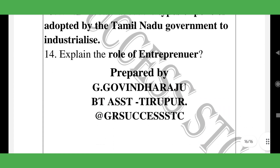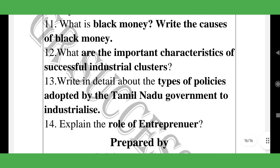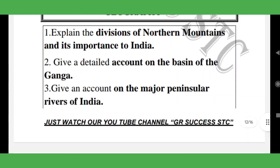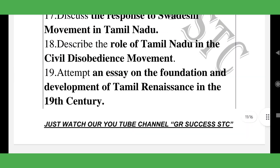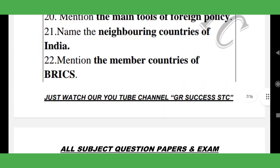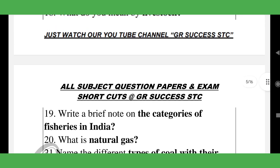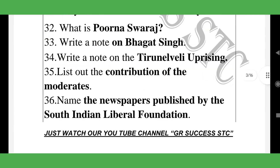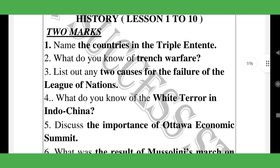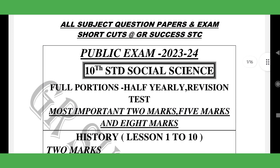So in this category, 10 Standard Social Science covers History, Geography, Economics, and Civics. The most important are the two-mark, five-mark, and eight-mark questions. This video is very useful — share it with friends and follow our channel. If you learn these, there is definitely an 80 to 90 percent chance of scoring well. We cover previous year questions and PTA questions.